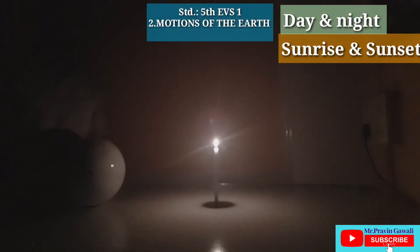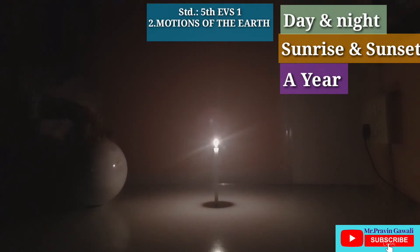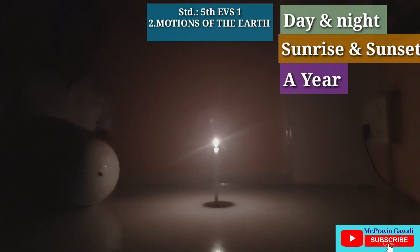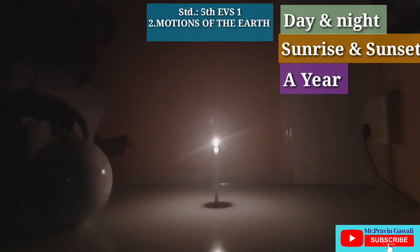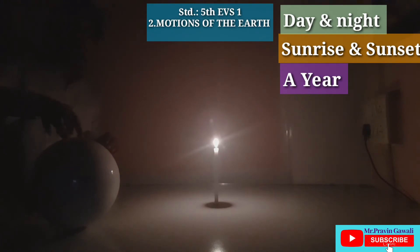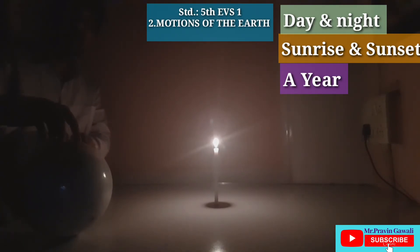Now we are going to understand about a year — how does a year occur. The earth rotates along its own axis and also revolves around the Sun in a particular orbit or specific path. We are going to learn both the rotation and the revolution of the earth. The earth rotates from west to east, and I have drawn the circle which represents the orbit.